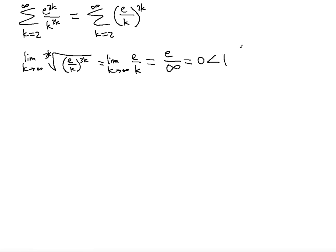Right? So it's less than 1, because 0 is less than 1, so it means that the original series, or this one, whichever one you want to look at, is absolutely convergent.